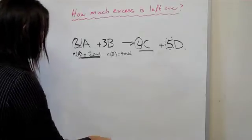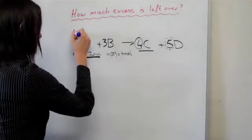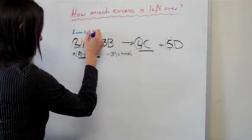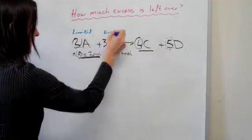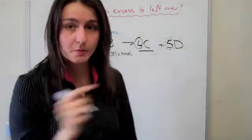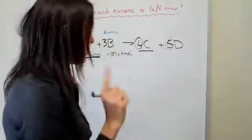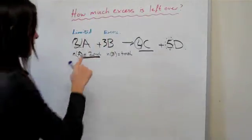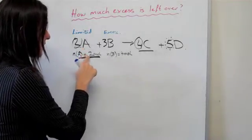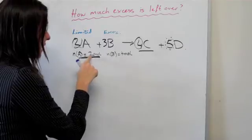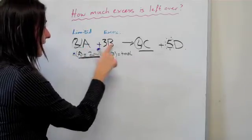Now if you just recall, this was limited and that was excess. To be able to find how much B we had left over, we have to take a few steps. First, we need to use this limited information to figure out how much B actually reacted with A.